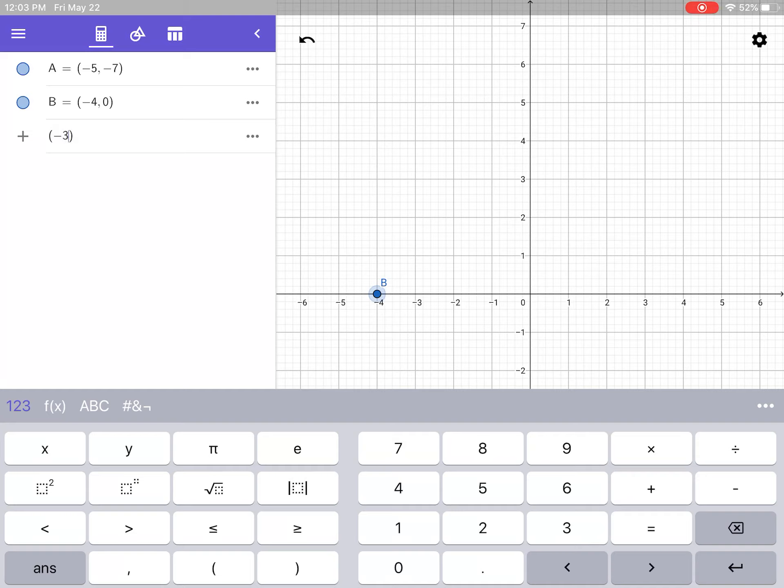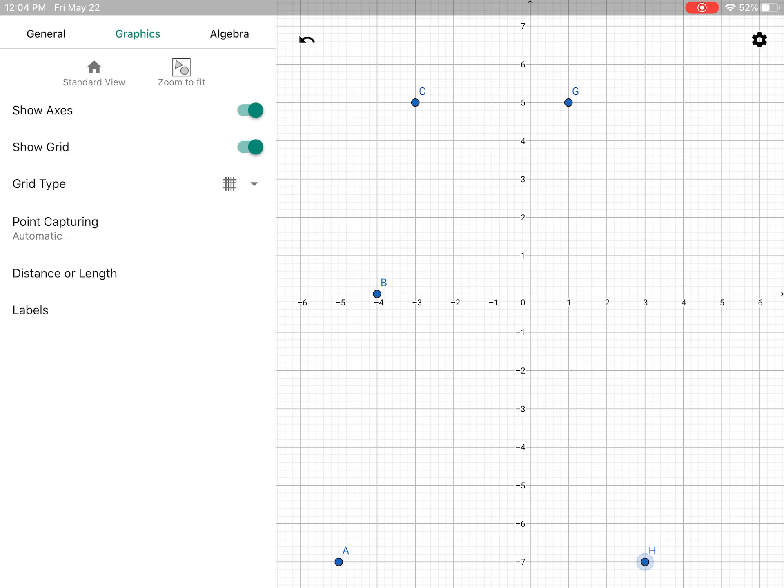Negative 4, 0, enter. Make sure you're putting that comma in. Negative 3 comma 5, enter. Negative 2 comma 8, enter. Negative 1 comma 9, enter. 0 comma 8. 1 comma 5, and 3 comma negative 7, enter.